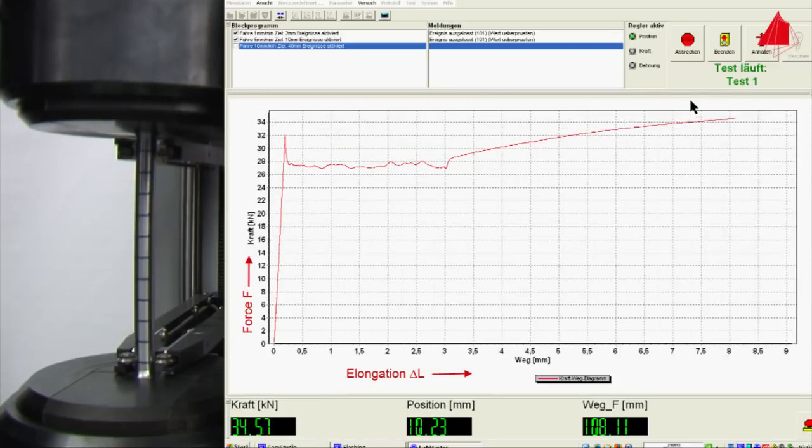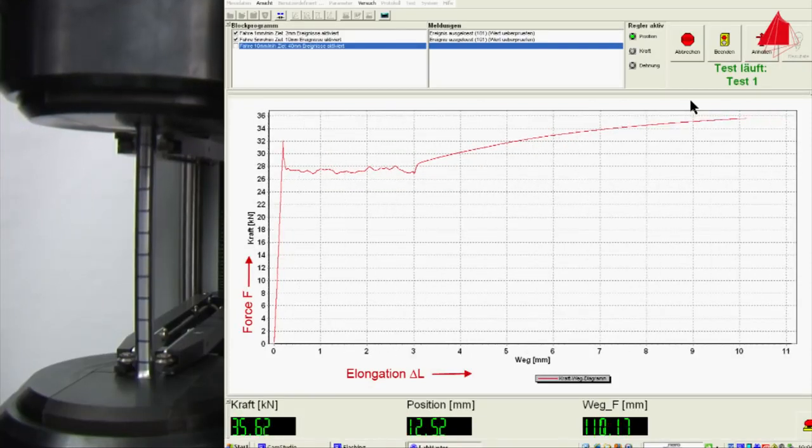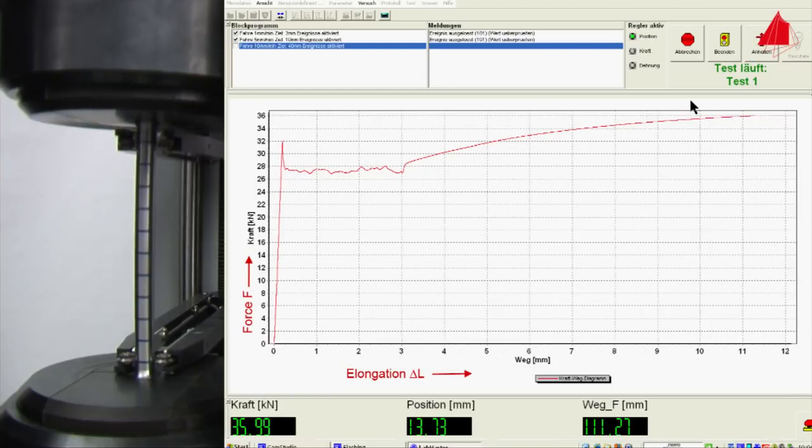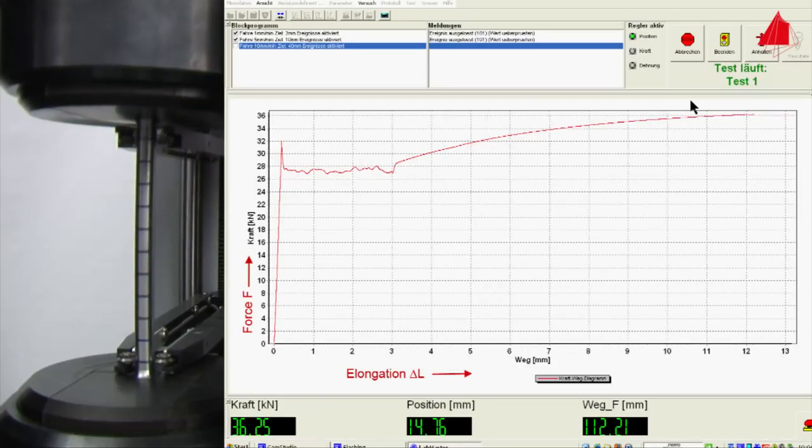Up to the point of maximum force, the test piece is strained uniformly along its length. This means that the test piece gets longer and thinner but keeps a cylindrical shape.